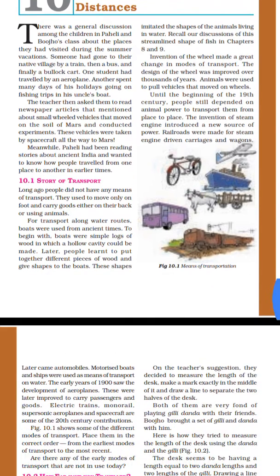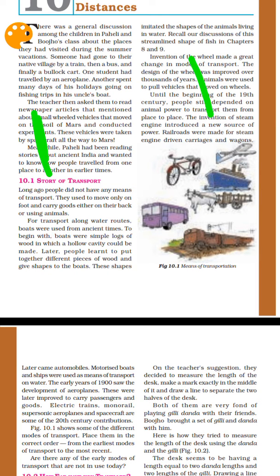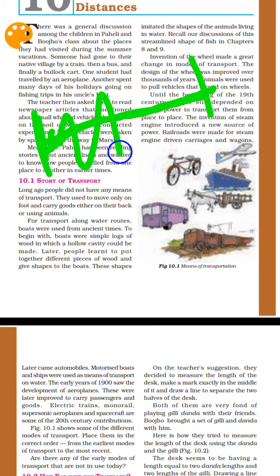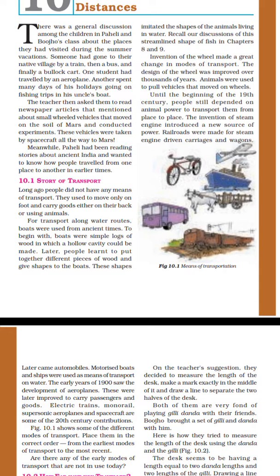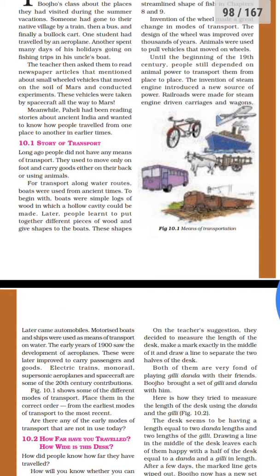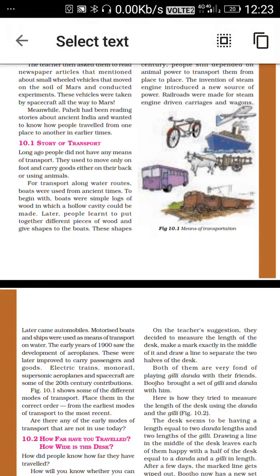We are going to show you here. For example, we have one human being here. How much distance is there? We are going to show you in the next column. We have different types — we are going to show you.